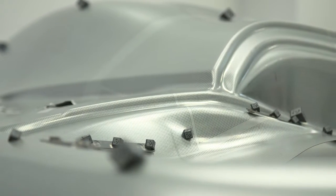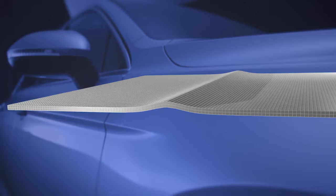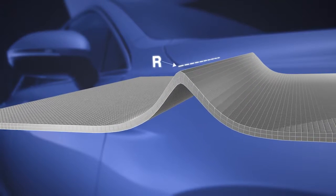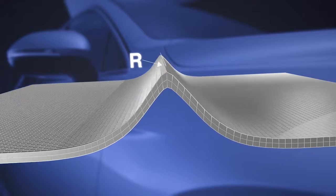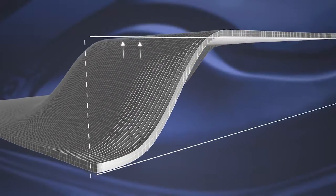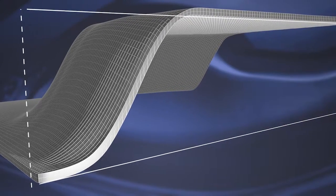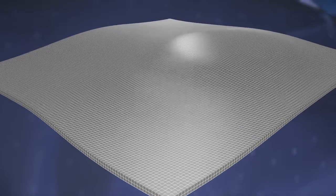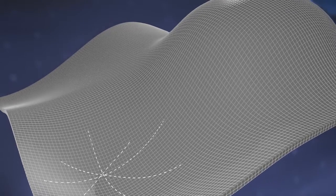Tata Steel recognizes there's an ever-growing need for extra-formable outer panel material with optimized surface topography. Material like this allows greater design freedom and effective use of modern paint systems, and it makes your press shop more efficient.